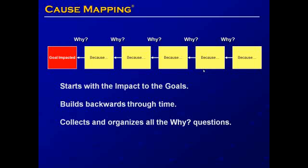To move on to step two of the cause mapping process, we will start with the impacted goal and ask why questions. The answer to those why questions becomes a cause and effect relationship that shows which goals were impacted. The cause map builds backwards through time, and we will collect and organize all the why questions.